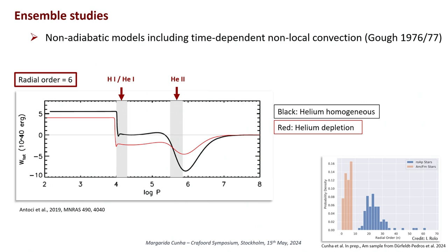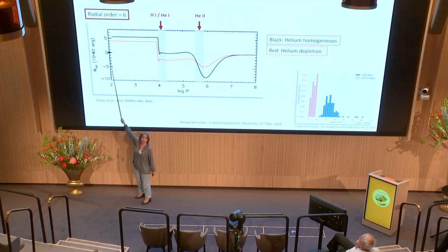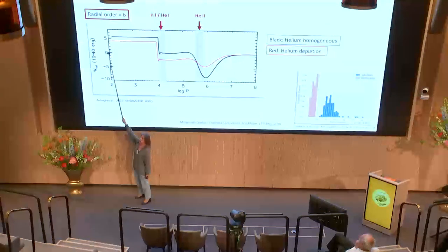One thing I haven't told you yet is that the pulsations in these stars are intrinsically unstable. That means they grow from small perturbations, and then through some nonlinear process, they end up stabilizing at a visible amplitude. Because they are intrinsically unstable, we can look at work integrals to try to understand whether a given mode of oscillation is driven, and so whether you expect to observe it or not. These are cumulative work integrals, which means that if you want to know if a mode is driven, you need to look near the surface of the star. If it's positive, then it's intrinsically unstable; if it's negative, the mode is damped.